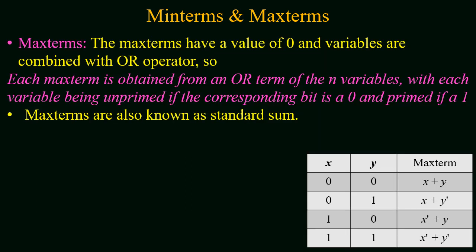Now we will study max terms. A max term has a value of 0, and within each max term, variables are combined with the OR operator. Each max term is obtained from an OR term of n binary variables, with each variable being unprime if the corresponding bit is 0, and prime if it is 1.